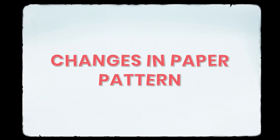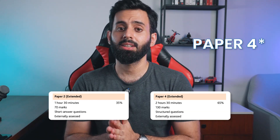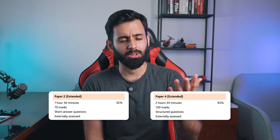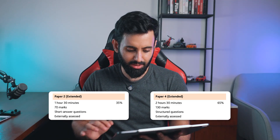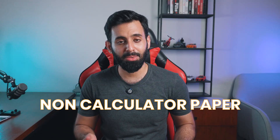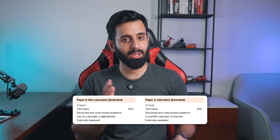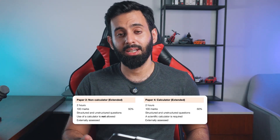Now let's talk about the change in paper pattern — and there's a bit of bad news here. Previously for the extended curriculum, paper two was 70 marks at 35% weighting and paper four was 130 marks at 65% weighting, with times of one hour 30 minutes and two hours 30 minutes respectively. Now, paper two is a non-calculator paper, but both papers are 100 marks each and two hours each.